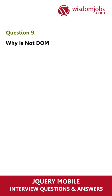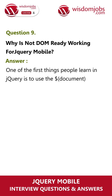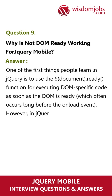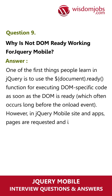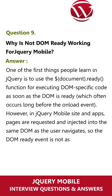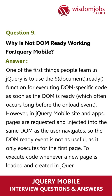Question 9. Why is DOM ready not working for jQuery mobile? One of the first things people learn in jQuery is to use the $DocumentReady function for executing DOM specific code as soon as the DOM is ready, which often occurs long before the onload event. However, in jQuery mobile sites and apps, pages are requested and injected into the same DOM as the user navigates, so the DOM ready event is not as useful as it only executes for the first page. To execute code whenever a new page is loaded and created in jQuery mobile, you can bind to the PageNet event.